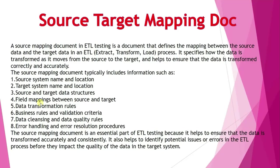The fifth point is data transformation rules. Then business rules and validation criteria — what exactly the business or client wants, which you can call business logic, and validation criteria: what type of validation the client wants in the form of results. The document also contains data cleansing and data quality rules. Data cleansing means we have to remove unwanted and repeating data, and data quality must be maintained.